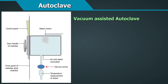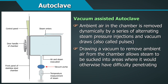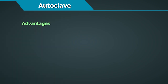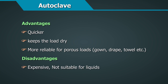The vacuum-assisted autoclave removes ambient air from the chamber dynamically by a series of alternating steam pressure injections and vacuum drawers, also called pulses. Drawing a vacuum allows steam to be sucked into areas where it would otherwise have difficulty penetrating, and steam fills the vacuum almost instantaneously. Advantages include being quicker and keeping the load dry, and it is more reliable for porous loads such as gowns, drapes, and towels. The disadvantage is that it is more expensive and not suitable for liquids.